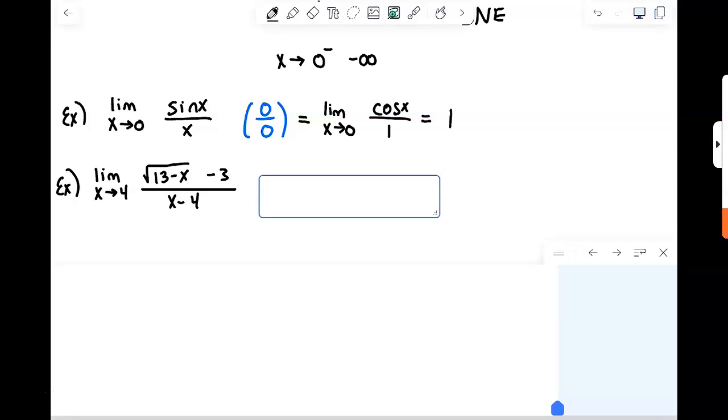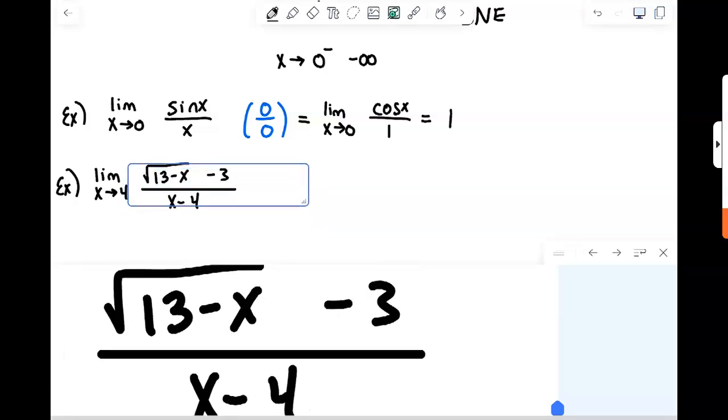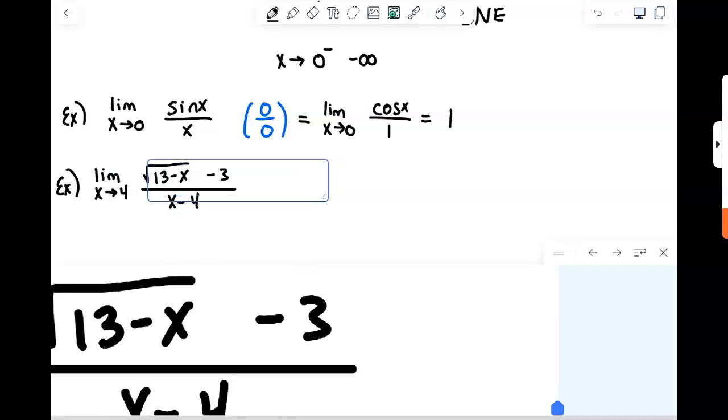All right, welcome back here. So this is a limit that we were able to compute previously by doing a process called rationalizing the numerator.